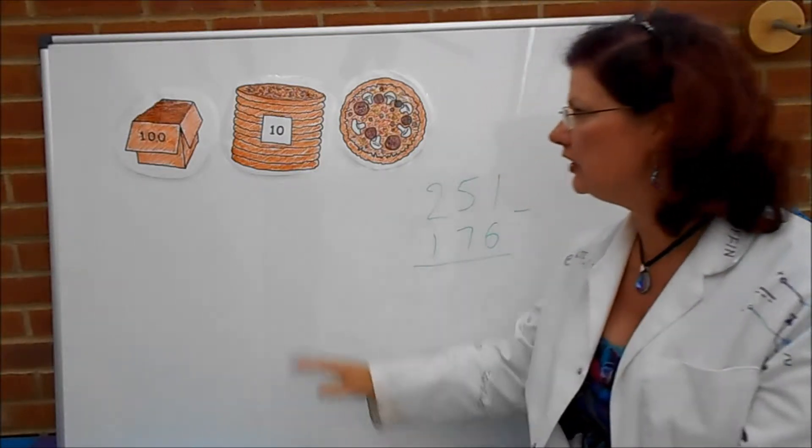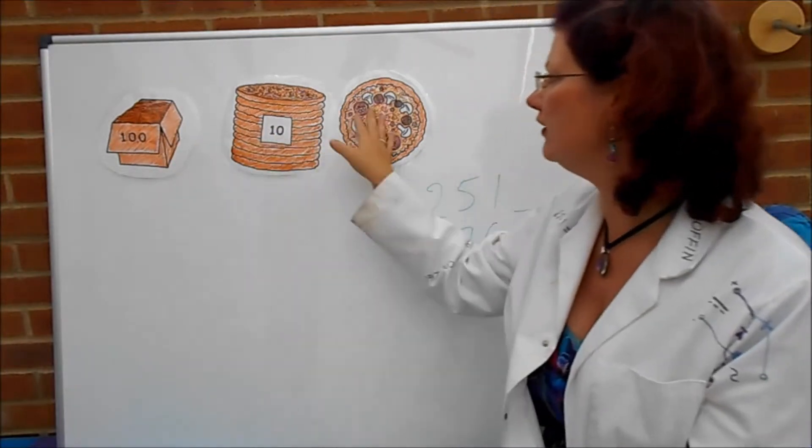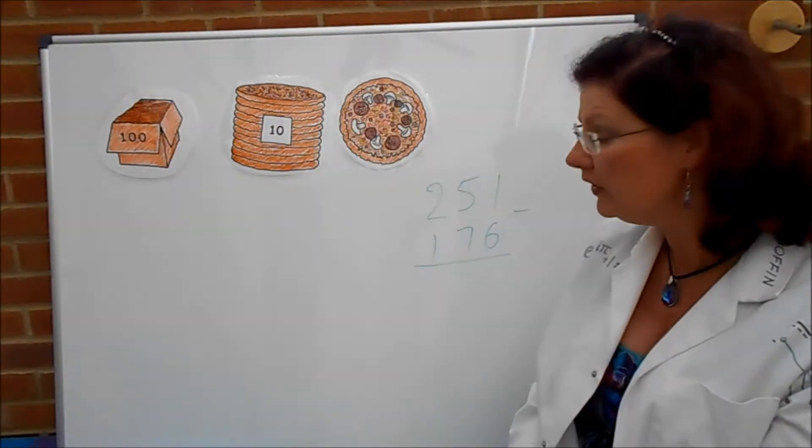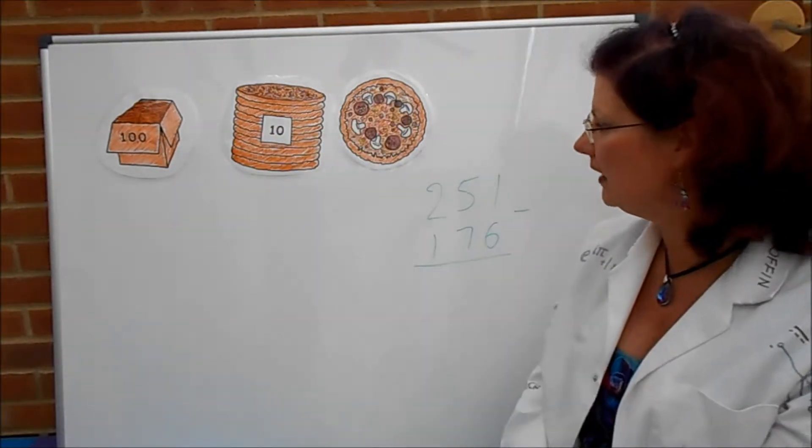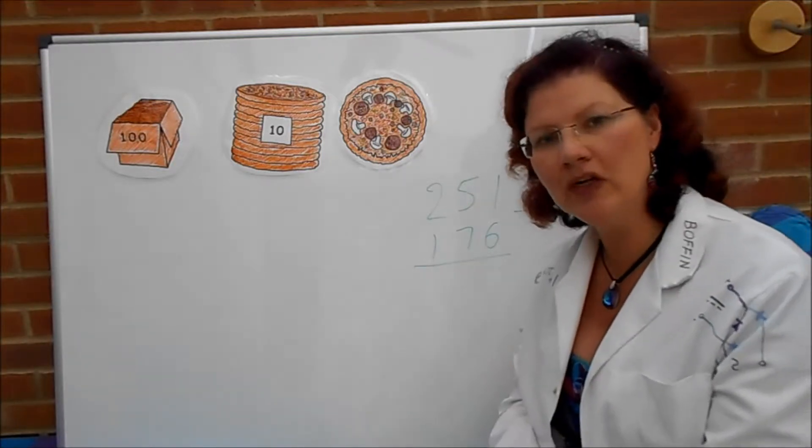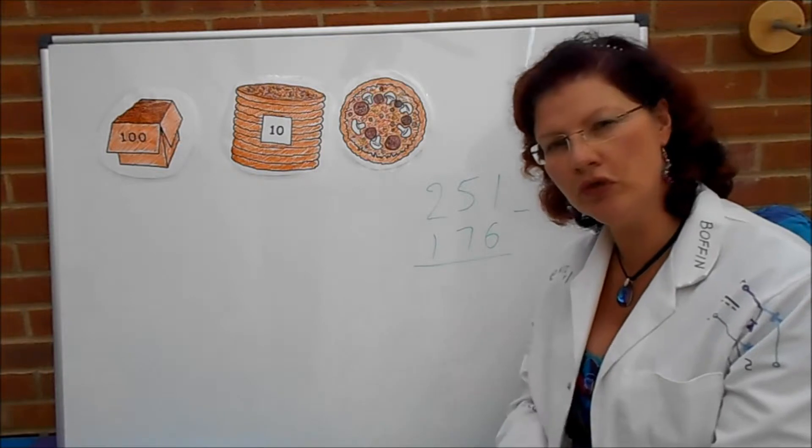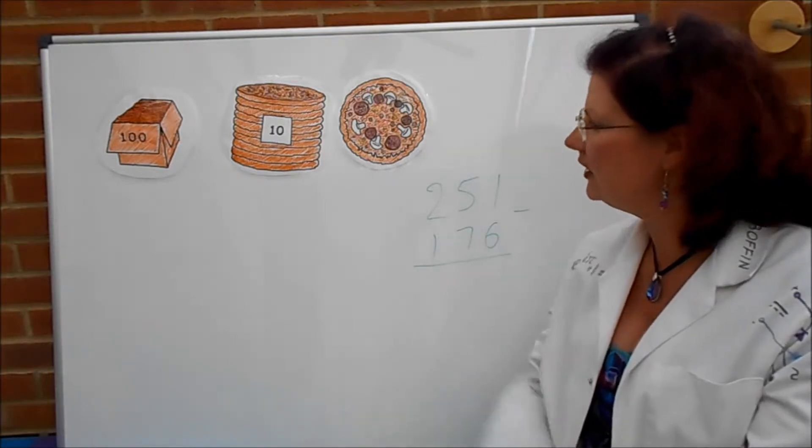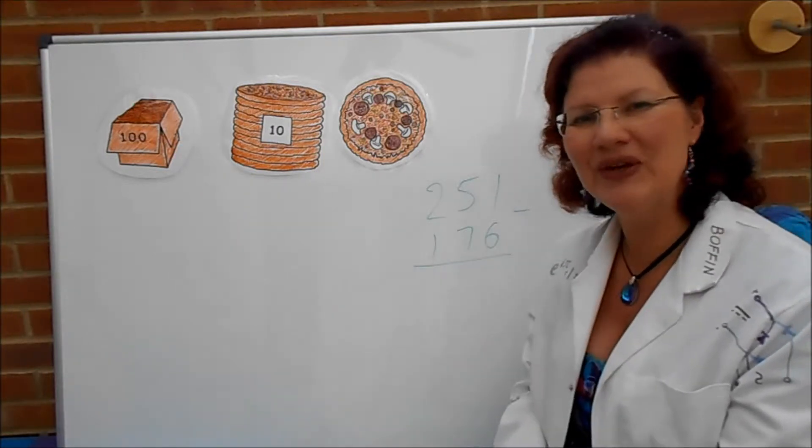So the first thing we need to do, we've got our hundreds, our tens and our units here. First thing we need to do is to set up that first number 251. So get out your place value pizzas if you've got some of those or you can just draw them on a piece of paper and set out the number 251. Pause the video while you do that now.